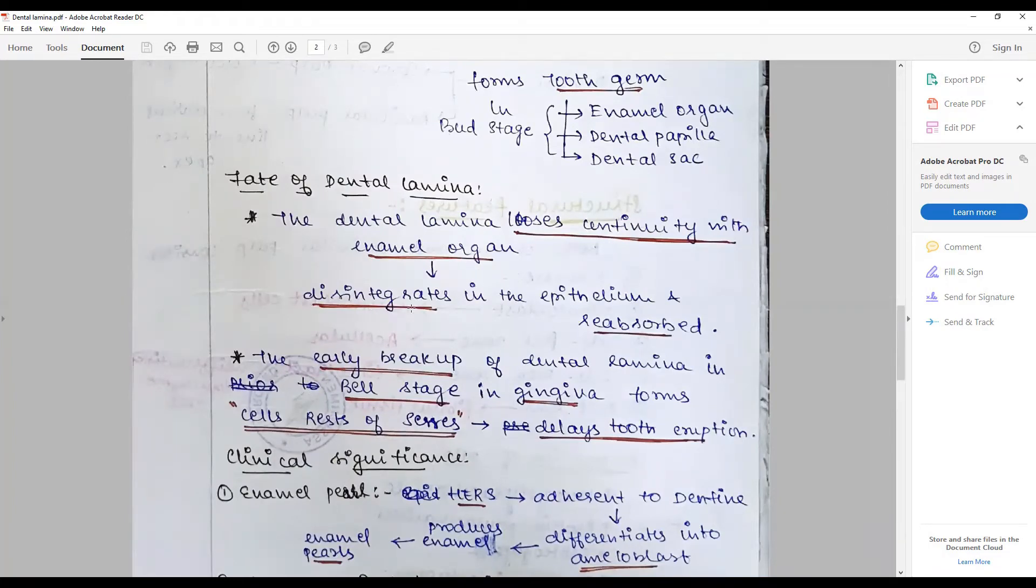It often disintegrates and undergoes apoptosis. The epithelium often resolves and goes away. In case of early breakup or persistence of these cells in the gingiva as cell rests of Serres, they are often associated with cysts and tumors.